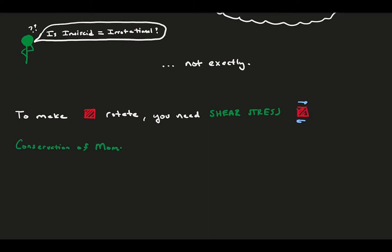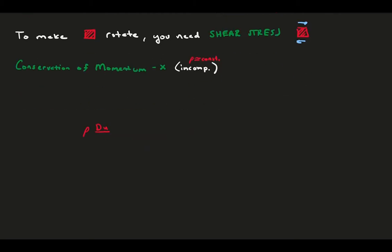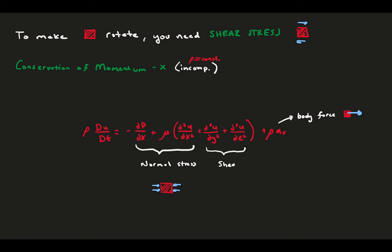Consider the conservation of momentum in the x-direction for an incompressible fluid. Focusing on the right-hand side, let's look at the terms that produce acceleration. First, we have the body force term. Second, there are two terms, one from pressure and the other from viscosity, which are associated with normal stresses. And, the other two terms are associated with the shear stresses. You might notice that both of these terms are due to the viscosity.